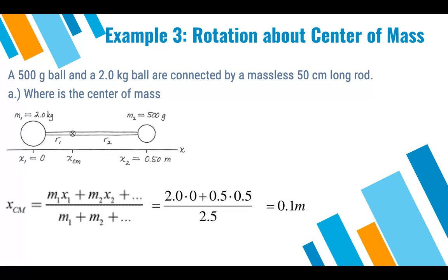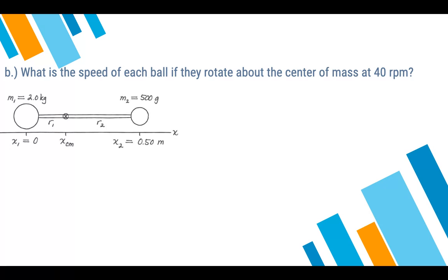So we're going to now take this application and apply it to uniform circular motion. In part B, they ask, what's the speed of each ball if they rotate about the center of mass at 40 revolutions per minute? So we're asked or told about speed here. Speed in uniform circular motion is the tangential velocity. So we need the tangential velocity of each ball, M1 and M2. They both rotate at a constant rate of omega. Omega is 40 revolutions per minute. So the rate of rotation is constant. The tangential velocity will depend on the radius.